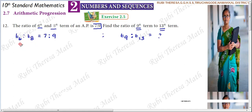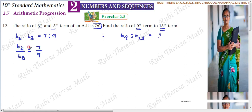How can you represent the ratio in fraction form? T6 by T8 — correct? You can represent it in fraction form. So T6 by T8 equals 7 by 9, in fraction form equals 7 by 9.